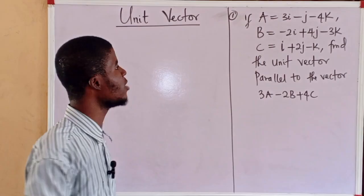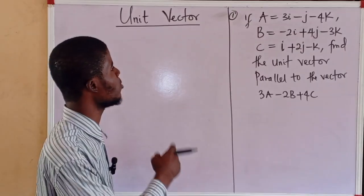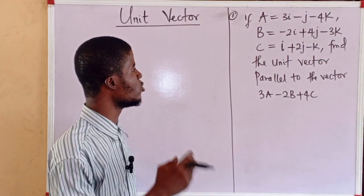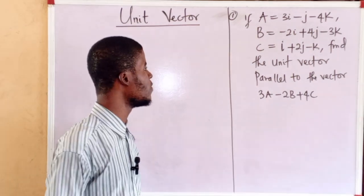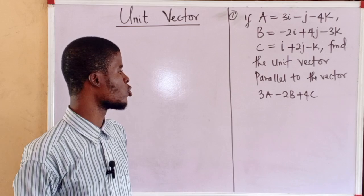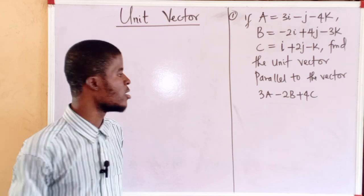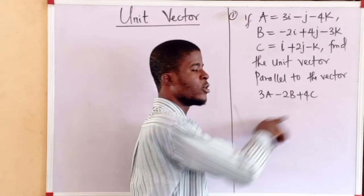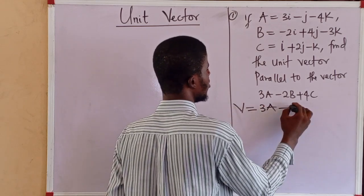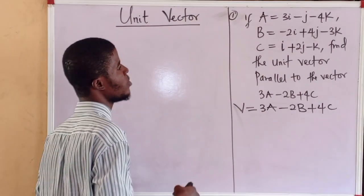If A equals 3i minus j minus 4k, B equals minus 2i plus 4j minus 3k, and C equals i plus 2j minus k, we are to find the unit vector parallel to the vector 3A minus 2B plus 4C — in other words, the unit vector in the same direction as this vector. Let's call this vector V, so V equals 3A minus 2B plus 4C.